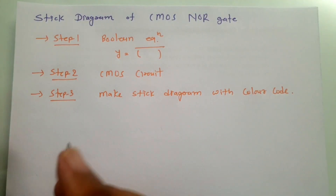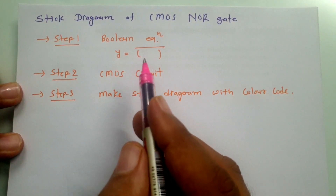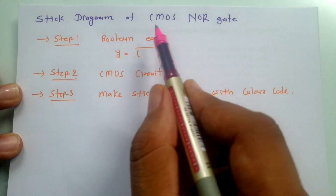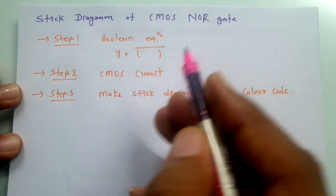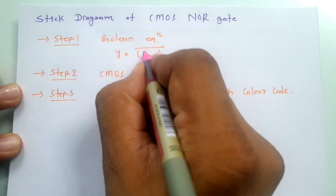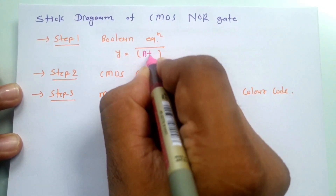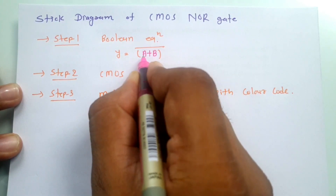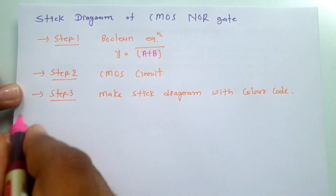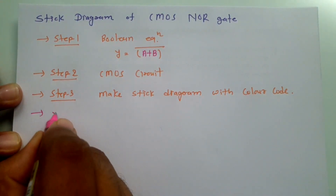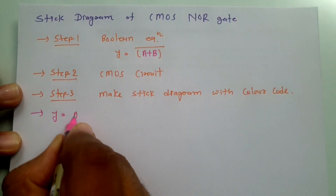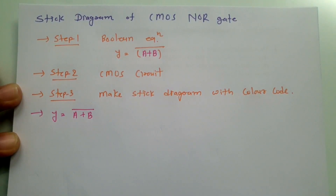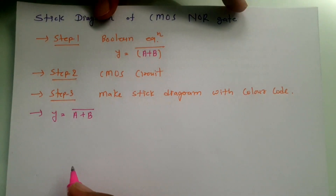So these are the steps to follow for a stick diagram. The question here is to draw the stick diagram of a CMOS NOR gate. We have inputs A and B, and the boolean operation of a NOR gate is A plus B whole bar. So my boolean equation is A plus B whole bar, and now we will implement the CMOS circuit.